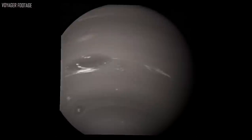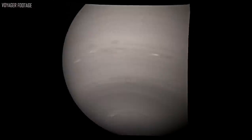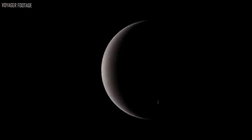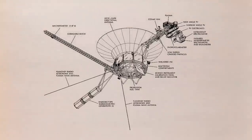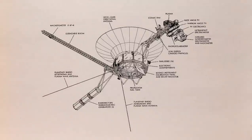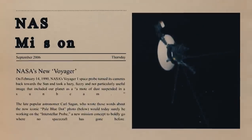The Voyager twins are, in many respects, relics of their period. They each have an 8-track tape recorder for storing data, 3 million times less memory than contemporary cell phones,